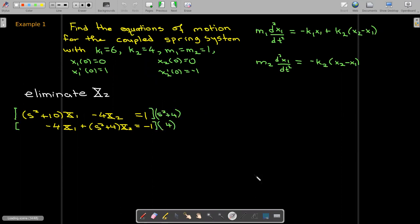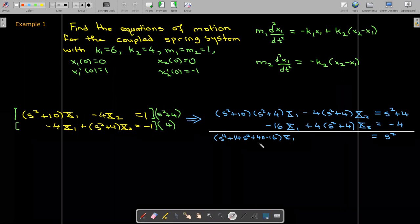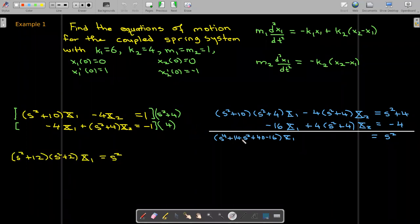So I'll start by eliminating x2. I'll do that by multiplying the top equation by s squared plus 4, the bottom equation by positive 4. I can add the resulting equations and now I only have x1. So do a little algebra with the term that's multiplied by x1 that can factor as s squared plus 12 times s squared plus 2. My right hand side simplifies to just s squared. And then I'll need to use a partial fractions decomposition. I won't show the details to be able to write that as two fractions.